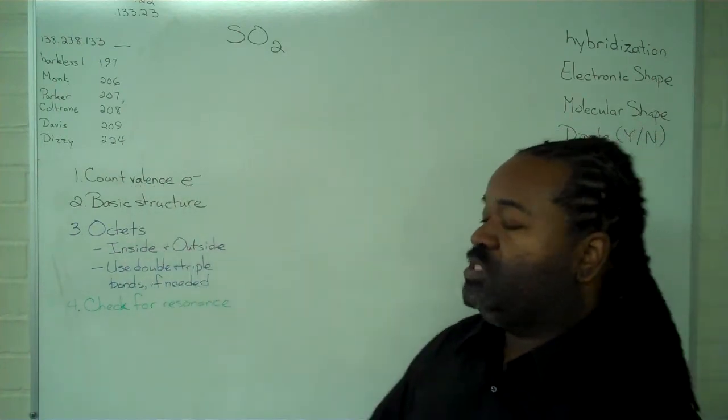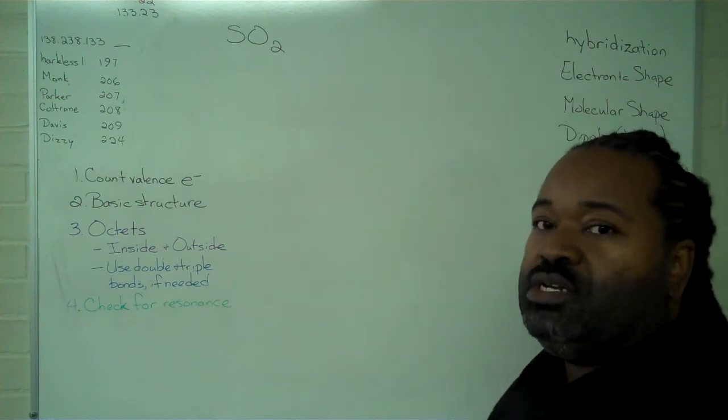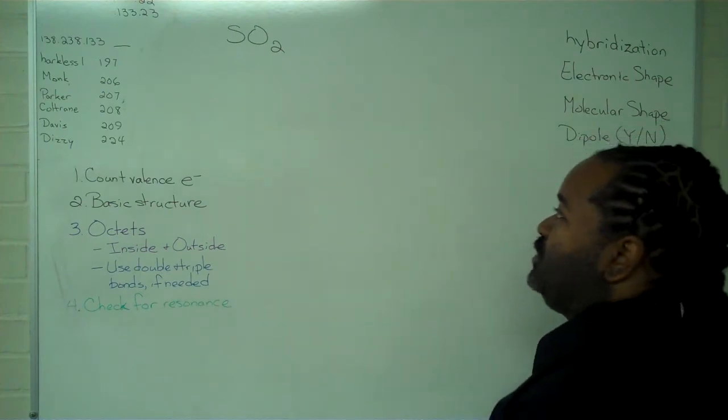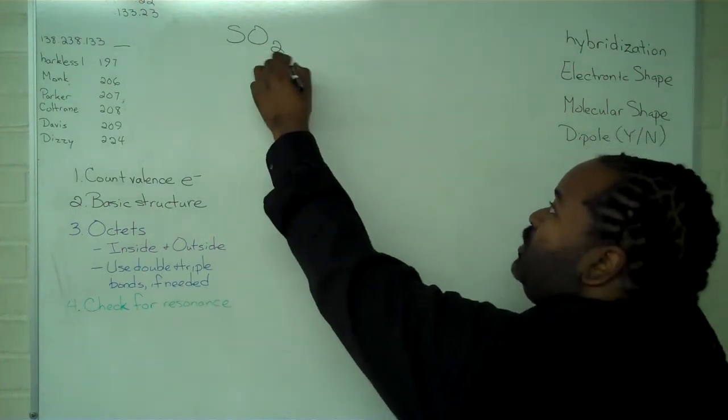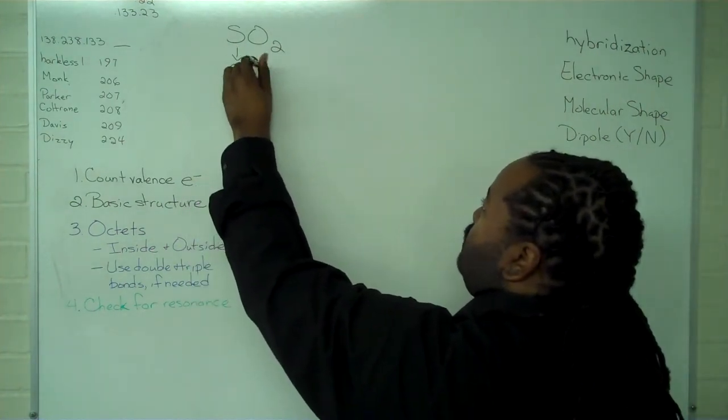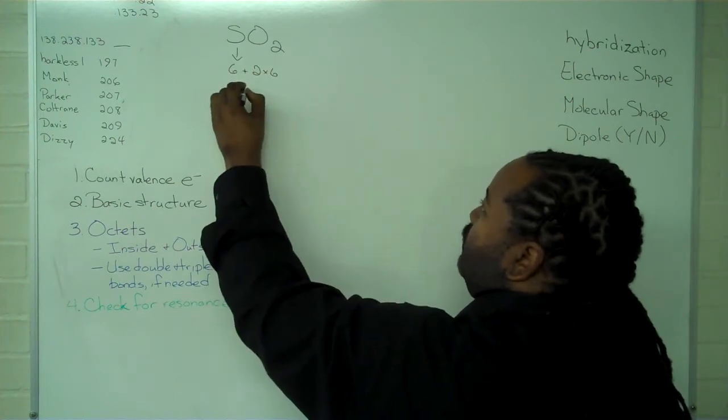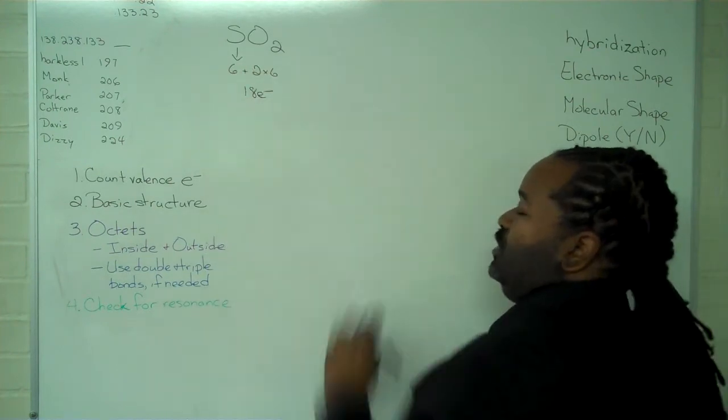So we begin with the first step, which is counting up our valence electrons. For this, we use a periodic chart to determine that SO2 is going to pick up 6 valence electrons from the sulfur and 2 times 6 from the oxygens, giving me a total of 18 electrons.